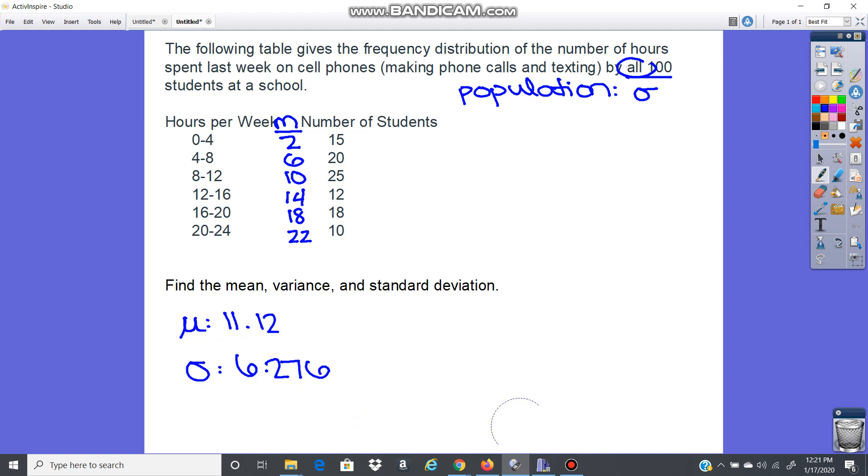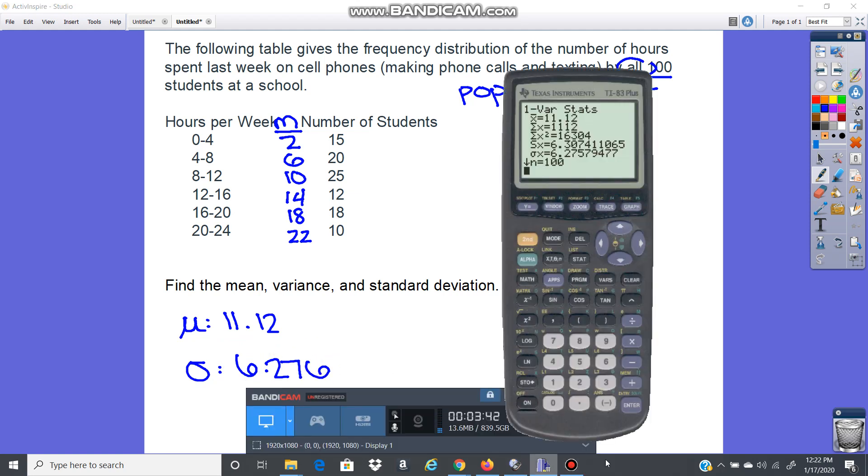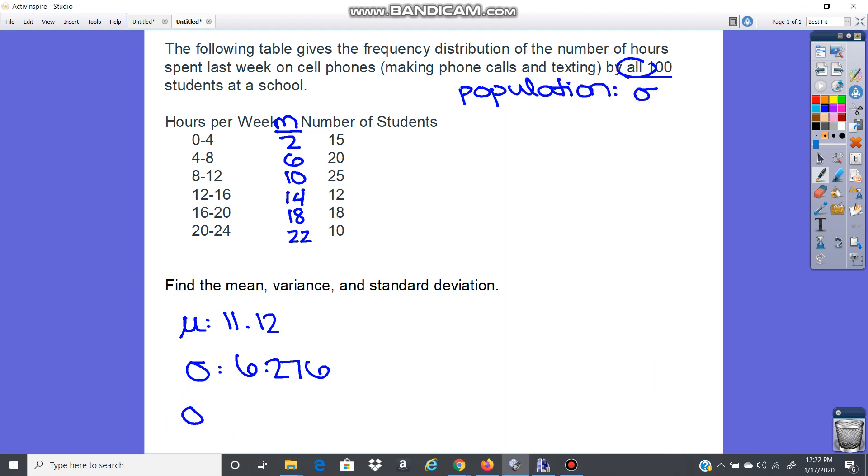And then if we want to find the variance, we will square that. So we'll take this 6.27579477, square it. We get 39.386. So the variance, 39.386.